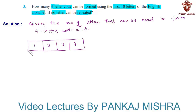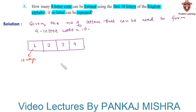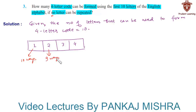The first letter of the code can be occupied by any one of the 10 letters in 10 different ways. As repetition of letters is not allowed, the second letter of the code can be occupied by the remaining 9 letters in 9 different ways.